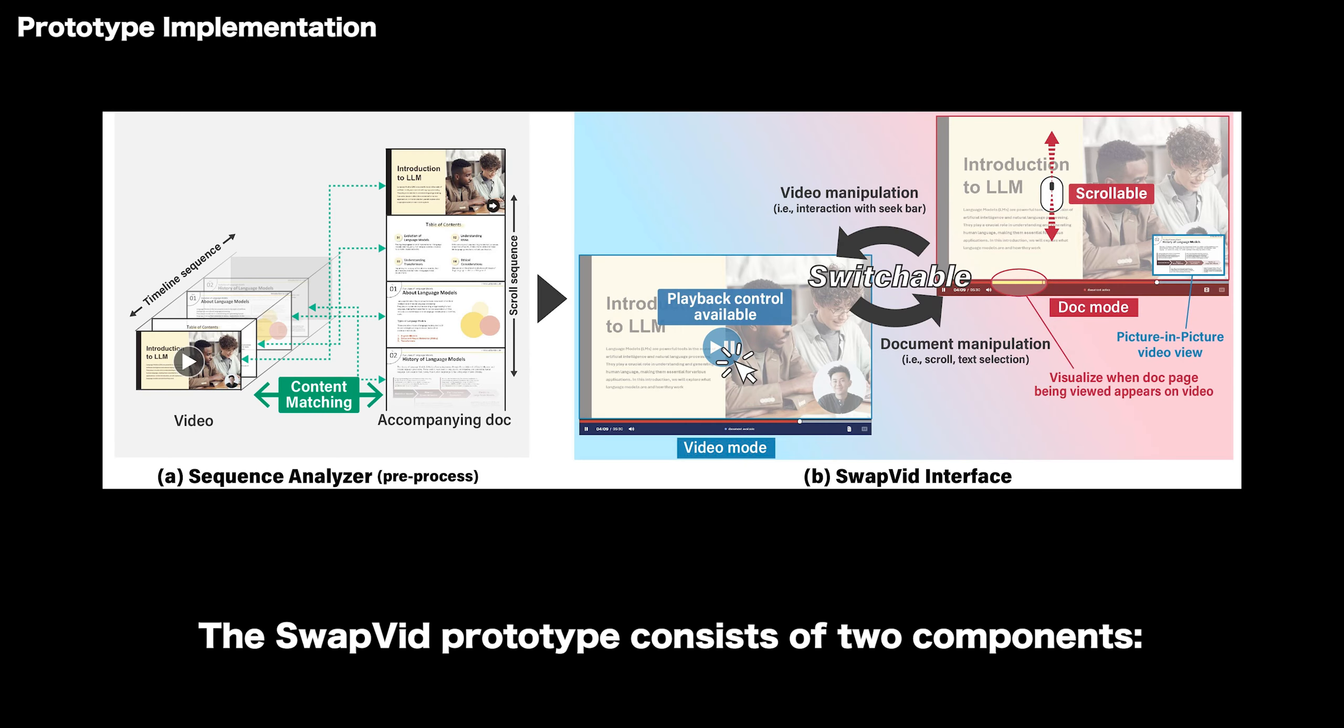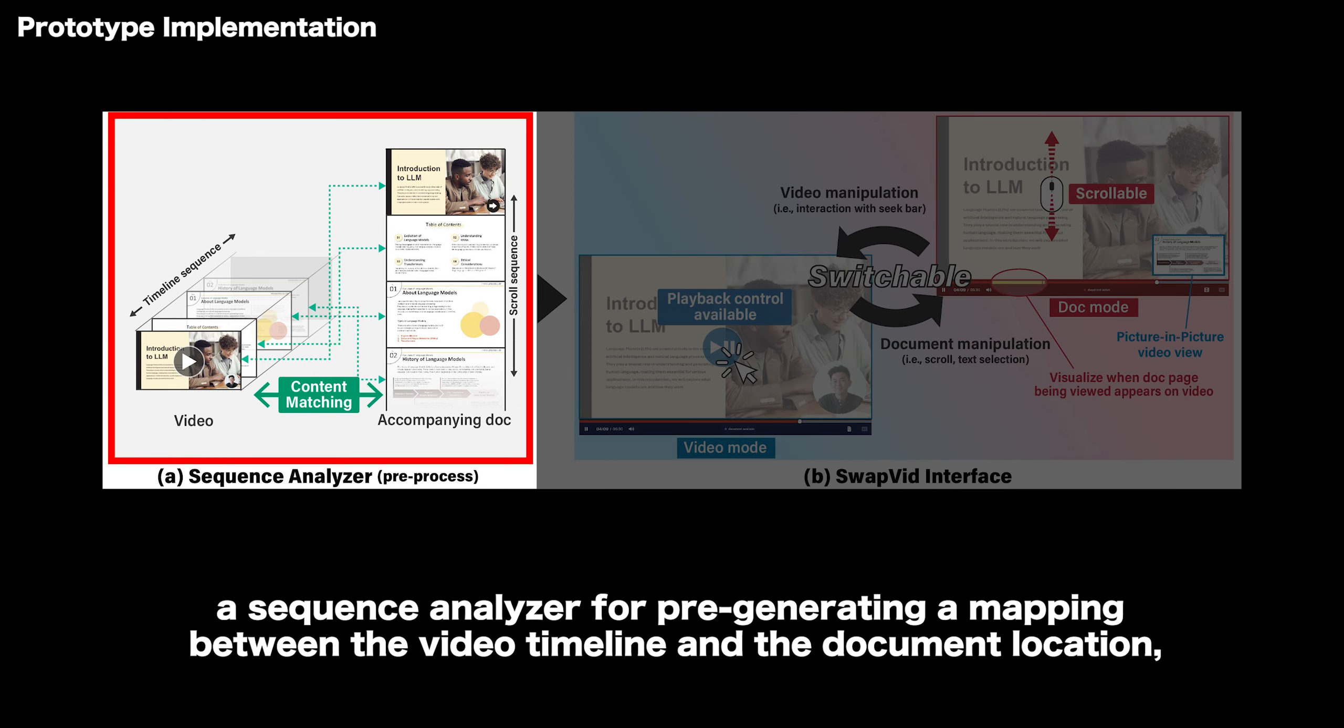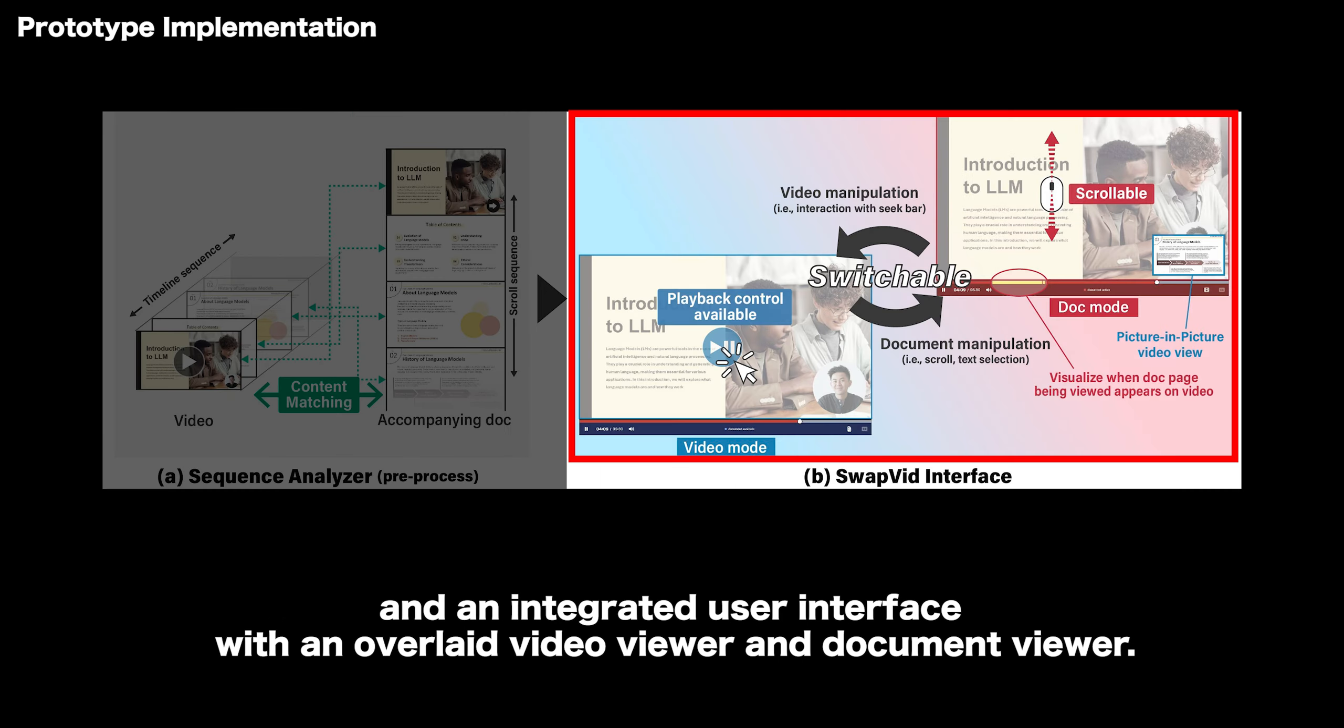The Swapvid prototype consists of two components: a sequence analyzer for pre-generating a mapping between the video timeline and the document location, and an integrated user interface with an overlaid video viewer and document viewer.